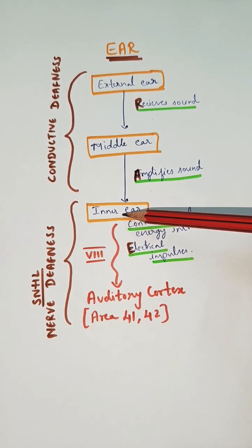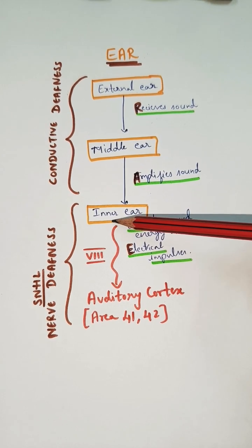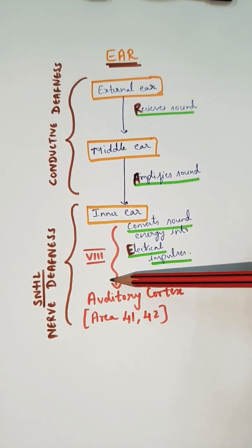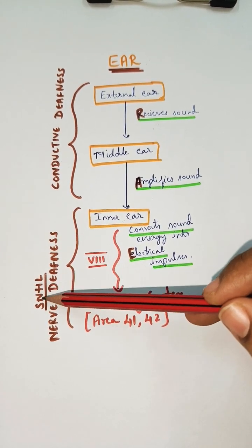When there's a problem in the inner ear - the receptor for hearing is your organ of Corti - the hair cells present in the organ of Corti are affected, or the nerve is affected, then we call it nerve deafness, which is also called sensory neural hearing loss.